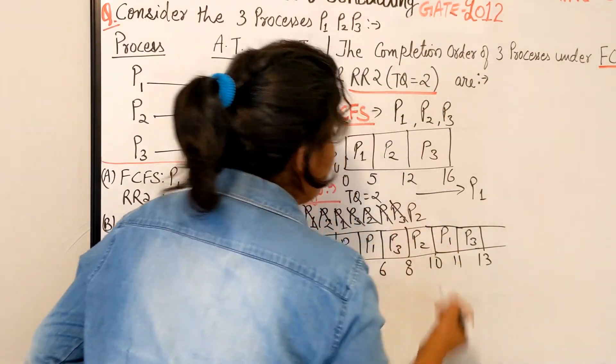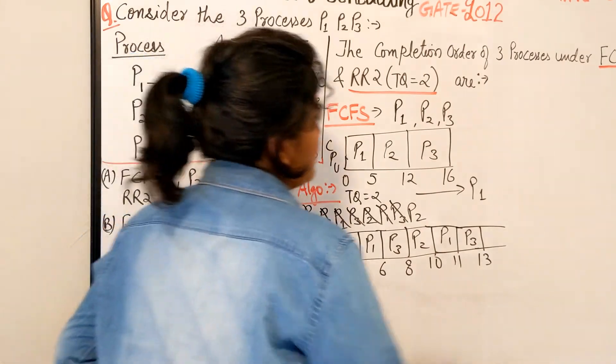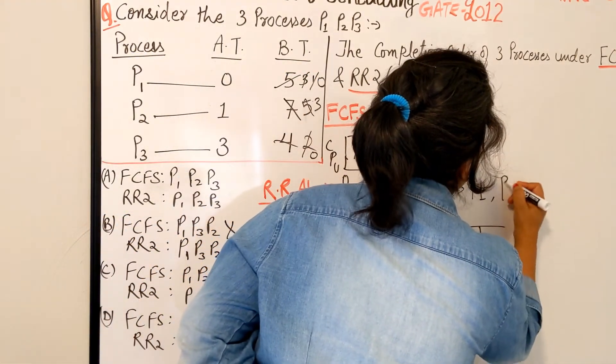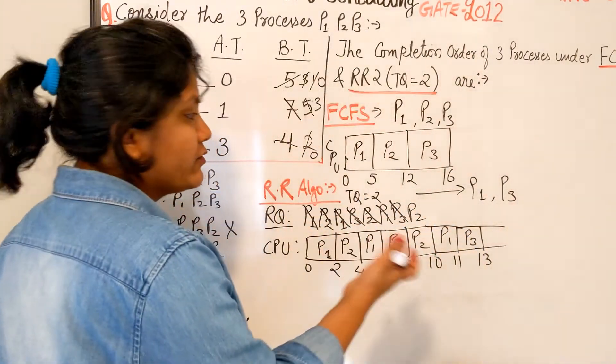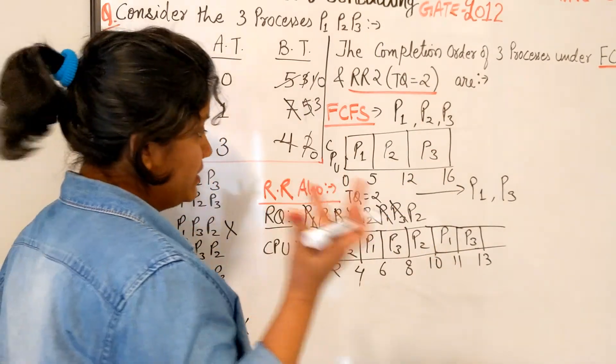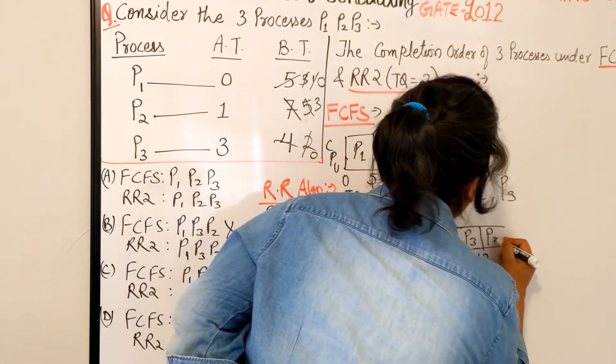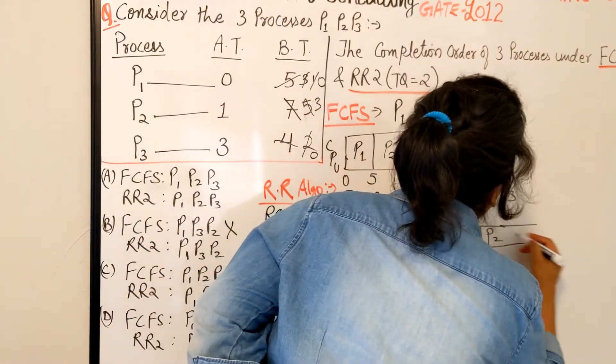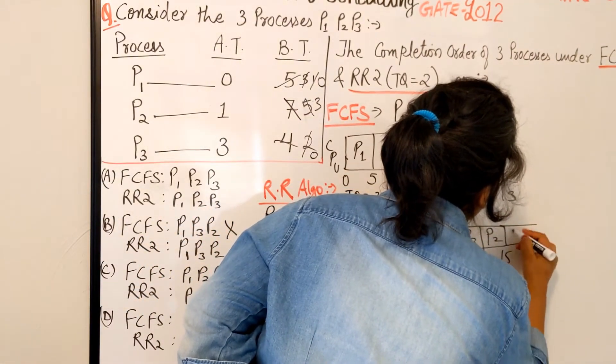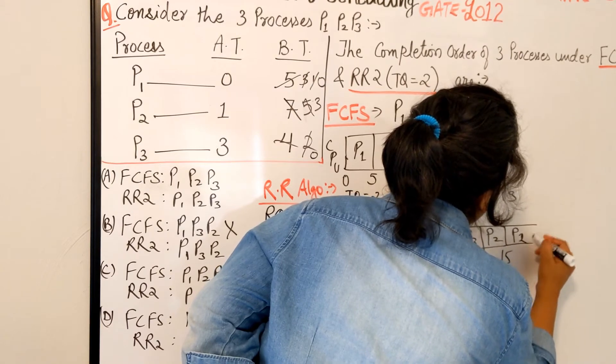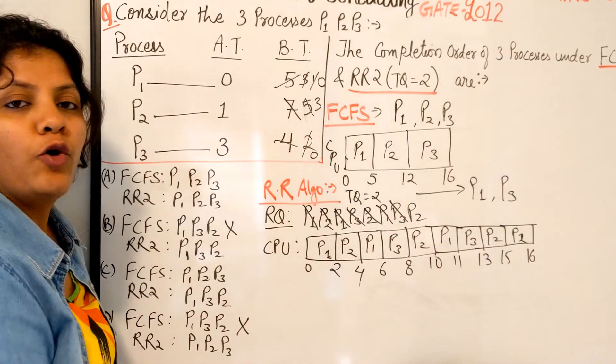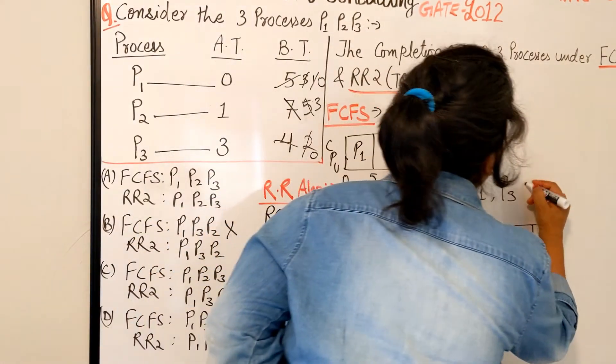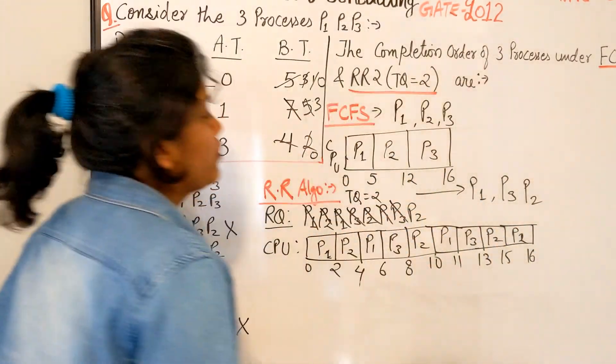Now I don't have to do furthermore in the exam, that's it. Now P2, what will I do here? P2 needs 3, so that simply says up to 15, and here up to 16. This is how P2 also gets finished. So last to finish is P2.